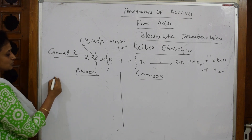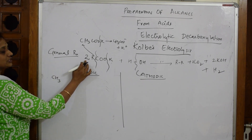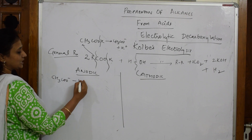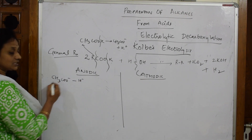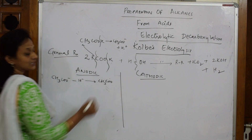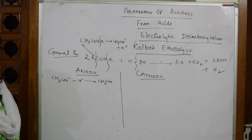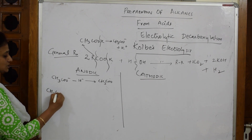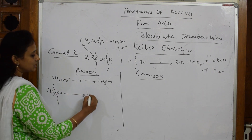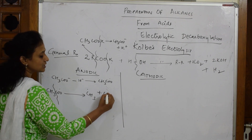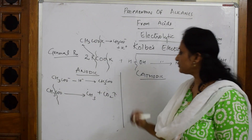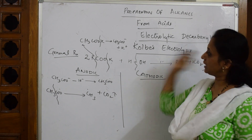At the anodic part, taking one mole: CH₃COO⁻ loses one electron — oxidation is loss of electrons — forming a CH₃COO• free radical. This free radical further dissociates: there is a cleavage of the bond, giving a methyl free radical CH₃• and carbon dioxide. So CO₂ is evolved at the anodic compartment.